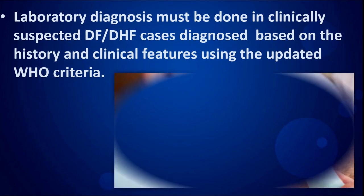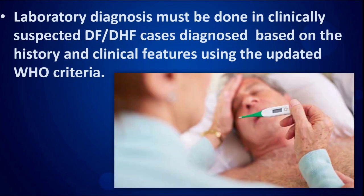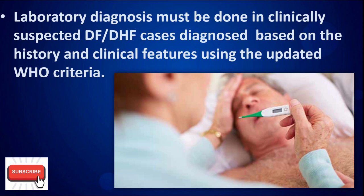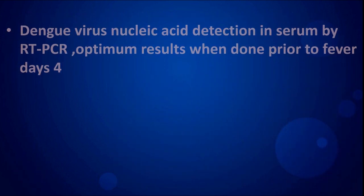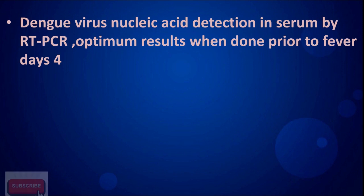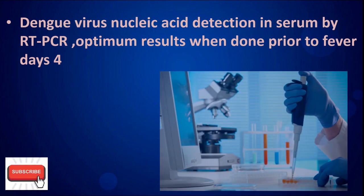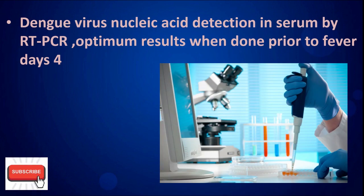Laboratory diagnosis must be done in clinically suspected dengue fever and dengue hemorrhagic fever cases, diagnosed based on history and clinical features using the updated World Health Organization criteria. Dengue virus nucleic acid detection in serum by RT-PCR gives optimum results.